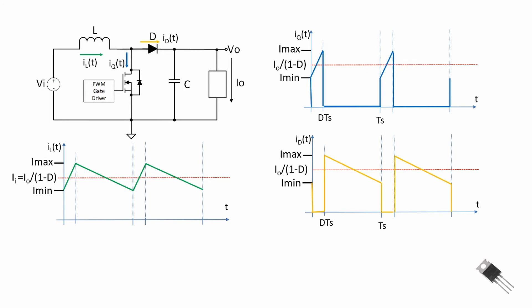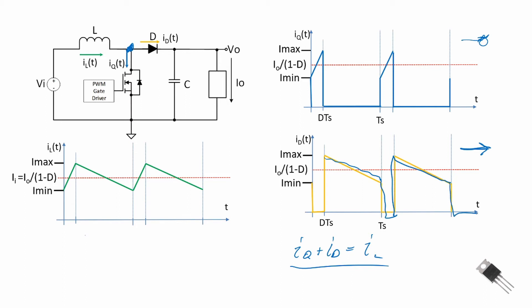Now let's look at the diode. By KCL at the switching node, the inductor current equals the MOSFET current plus the diode current: I_Q + I_D = I_L. The current waveform through the diode is determined by the selected ripple, where the ripple current ΔI = I_max − I_min. The maximum current determines the diode current rating. The maximum repetitive reverse voltage across the diode is approximately V_out, so we size the repetitive reverse maximum voltage equal to V_out.